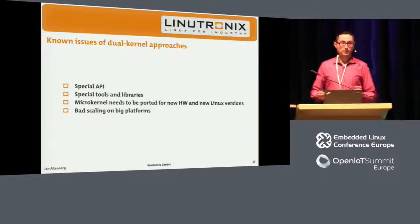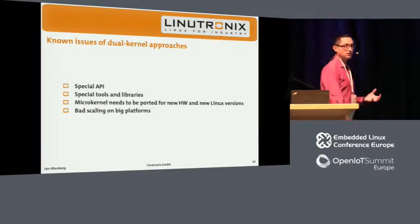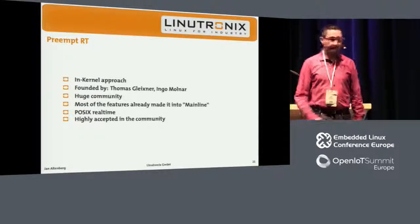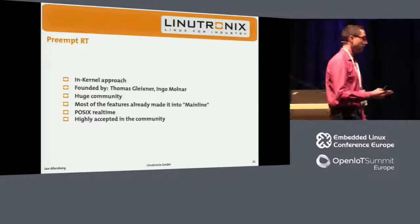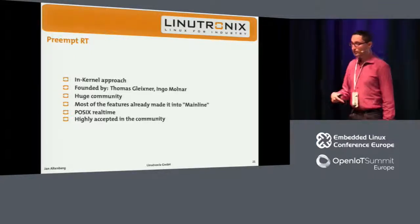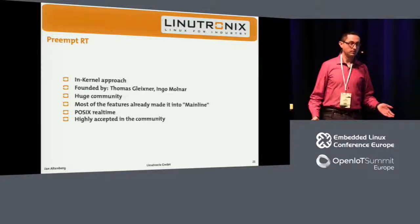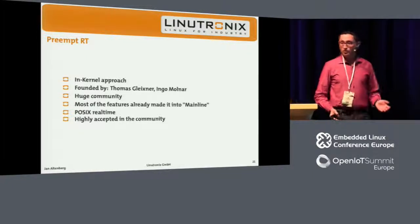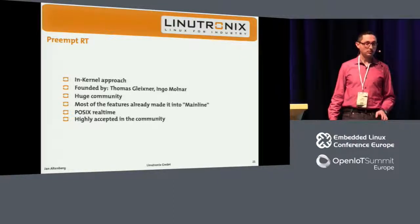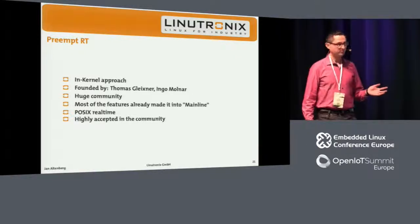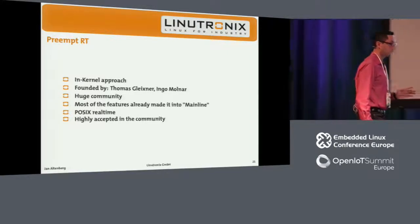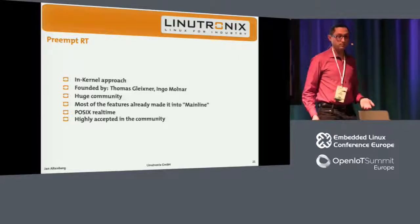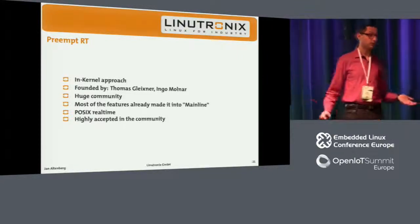For that reason, people started to rethink if there wouldn't just be a way to make Linux itself real-time capable. We now have one approach called PreemptRT, or the so-called real-time preemption patch. The reason for this name is we basically introduce a new preemption model to Linux, called real-time or full preemption. This is a classical single-kernel or in-kernel approach making Linux itself real-time capable. This approach is now around for 12 years, widely used in the field. It was basically founded by Thomas Gleixner and Ingo Molnar — in 2004, these two guys started a lot of real-time Linux development, coordinated their work, and the result was the real-time preemption patch.